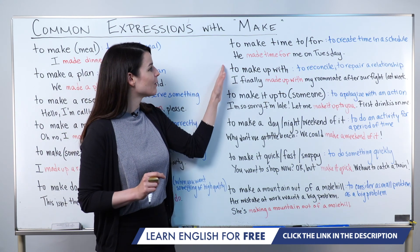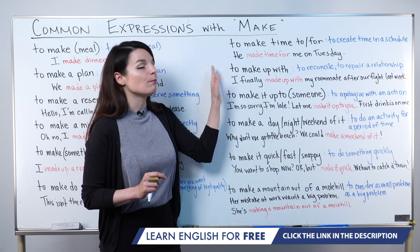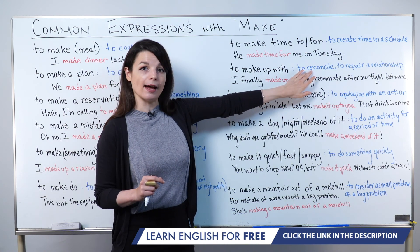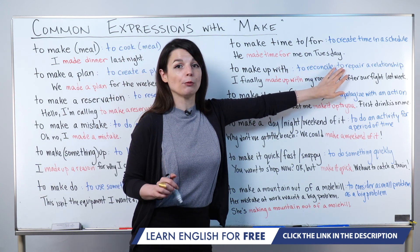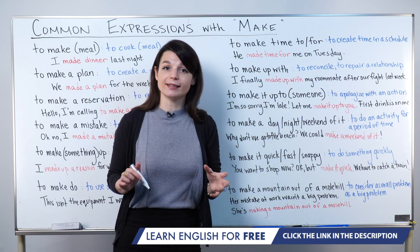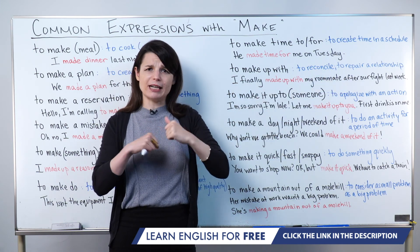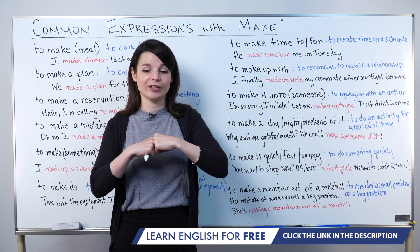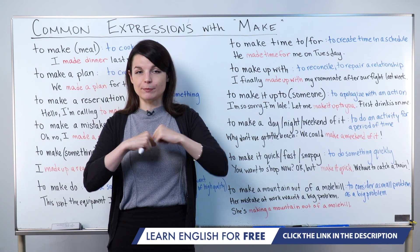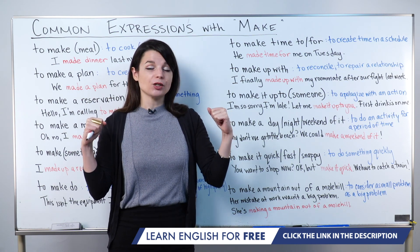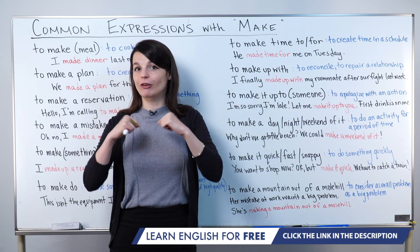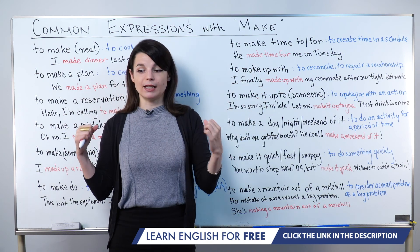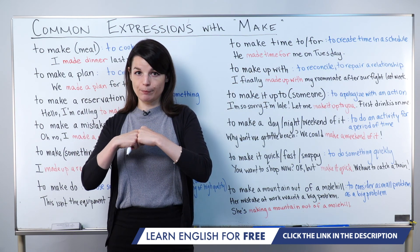The next one is to make up with. To make up with means to reconcile, which means to repair a relationship. For example, you have a fight, an argument, a disagreement — something bad happens in your relationship. You have some distance or a problem. But to reconcile means to fix that relationship. So to make up with someone means to repair that relationship.